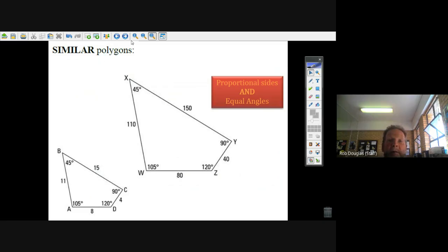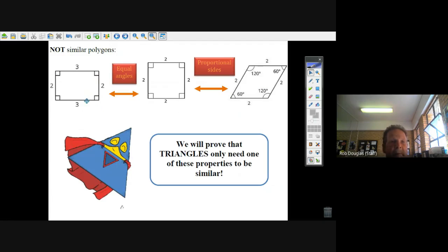Well, we can sometimes have polygons that have equal angles but their sides are not going to be proportional. Well, think of a rectangle that's got 90 degrees in each side.